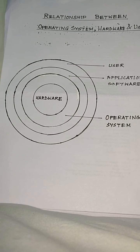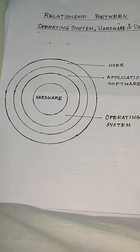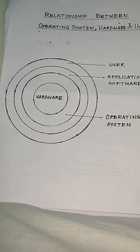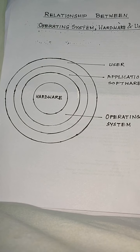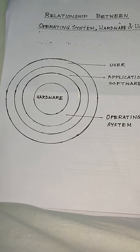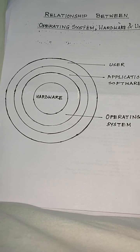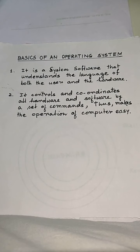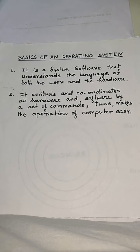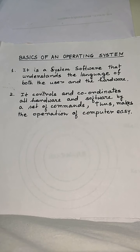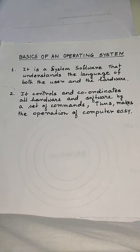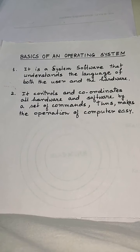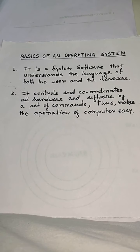The computer is getting ready for work using the operating system, and the user is using the computer through the application software. They are giving commands or instructions to the operating system and interacting with the hardware. An operating system is a system software that understands the language of both the user and the hardware. Thus, it acts as an interface. An operating system controls and coordinates all hardware and software by a set of commands and makes the operation of the computer easy.